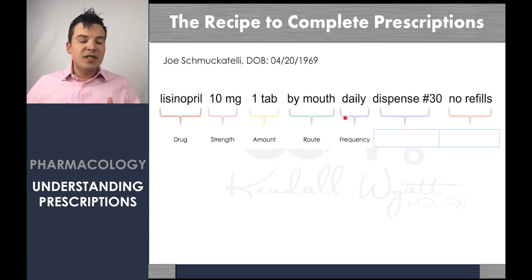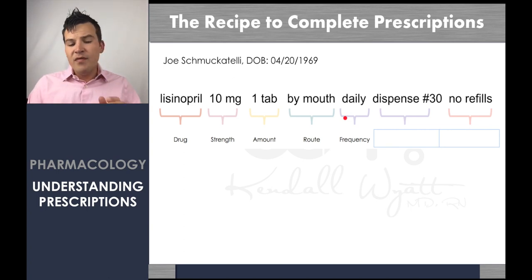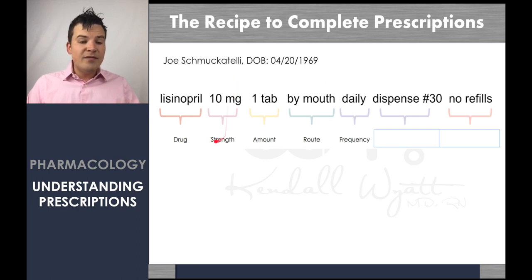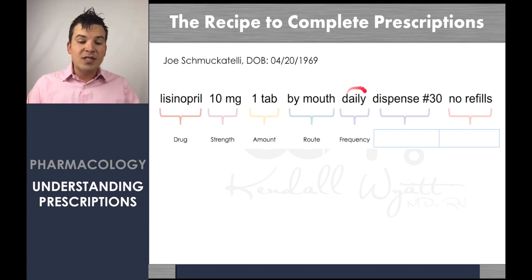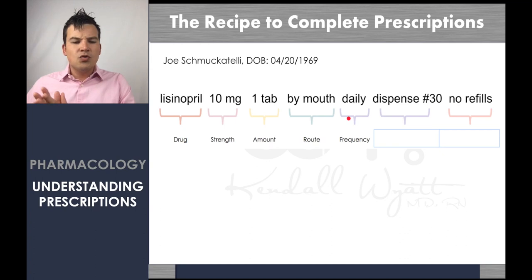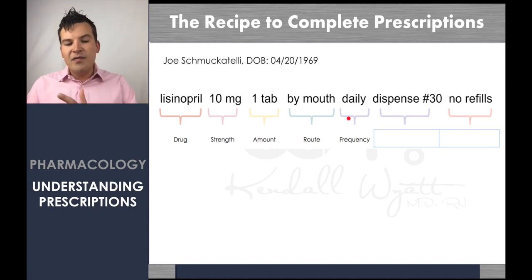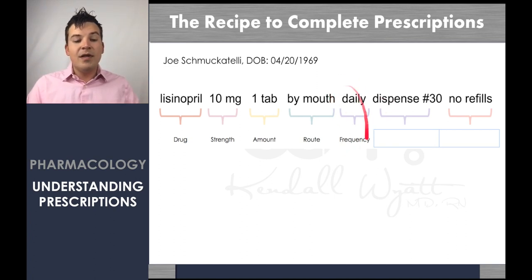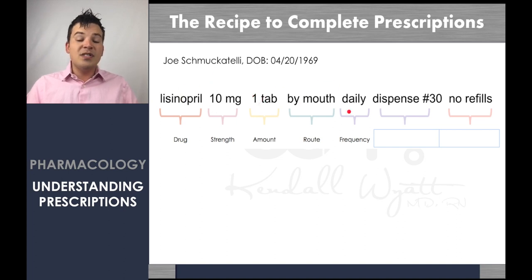The next thing is frequency — how often is this medication supposed to be given? There are lots of different frequencies and we'll talk about abbreviations for those in a moment. For lisinopril, we want to give it to Joe once a day — daily. Drugs can be given every two hours, once a day, every other day, at night, or in the morning. This is notated in the frequency part. It's like building blocks of your sentence, all the way up until you have it fully built.